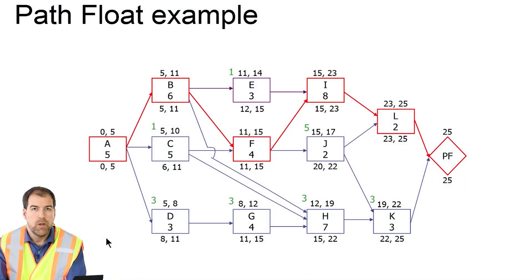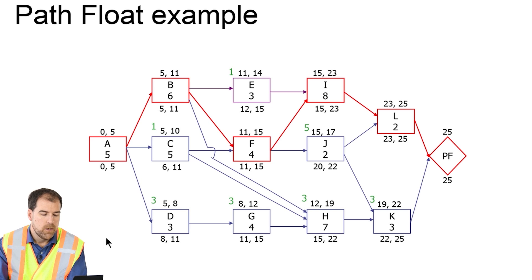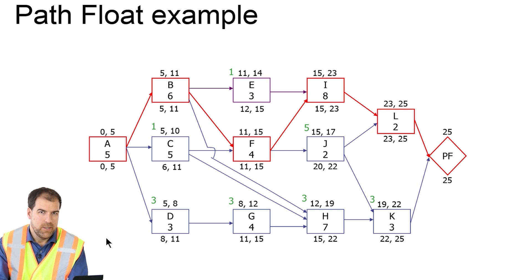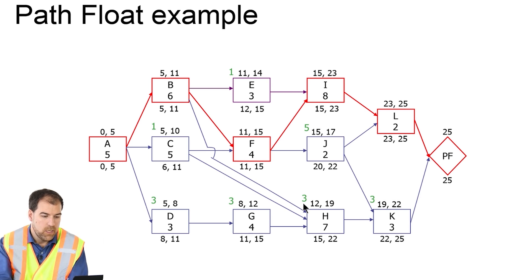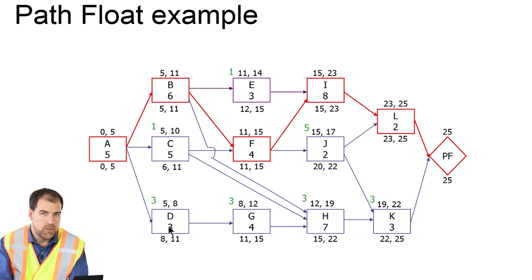Let's look at a simple example. You've probably seen these network diagrams before. The critical path is in red, total float values are in green, and early and late dates are calculated there as well. Let's look at the float path along the bottom — ADGHK. As you can see, all of those activities have three days of float, so this is a float path with three days of float. If activity D eats up the total float, there's no more float left for G, H, and K, because it's really shared along that path.